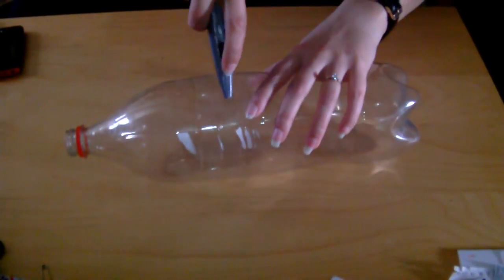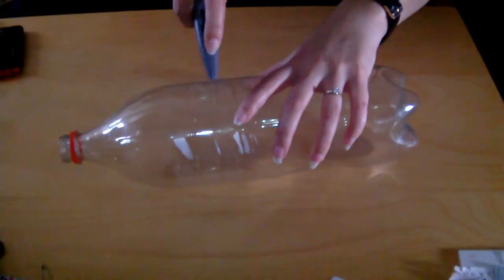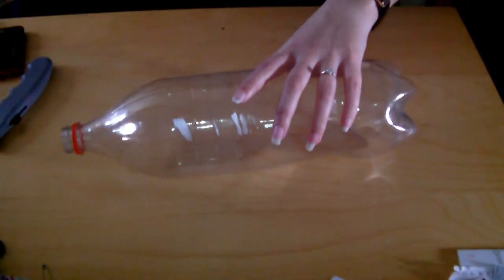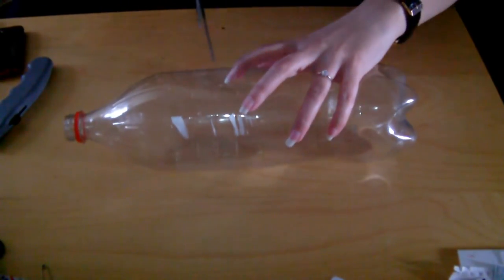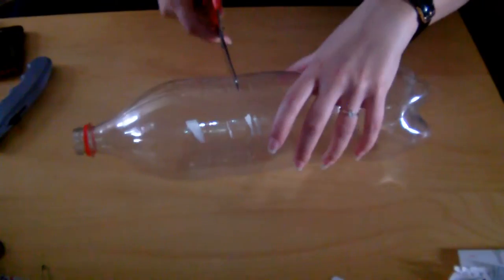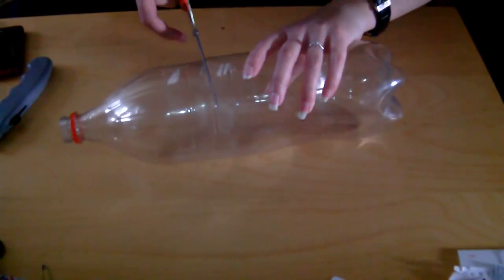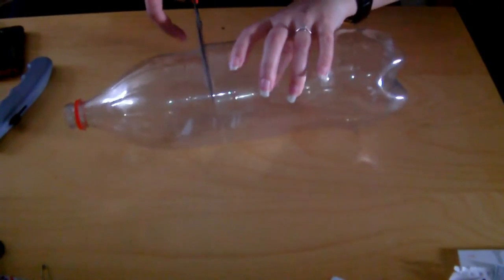So basically you just get a sharp knife and pierce a hole in the side of the bottle. This just makes it easier to get your scissors in. And we're going to cut round the middle of the bottle. Be careful not to cut yourself because this plastic can be quite sharp.